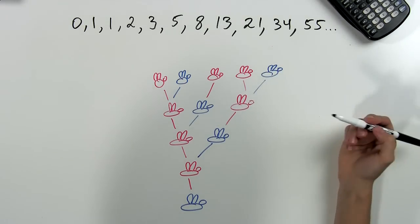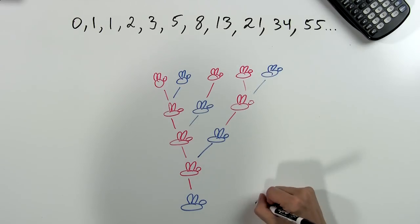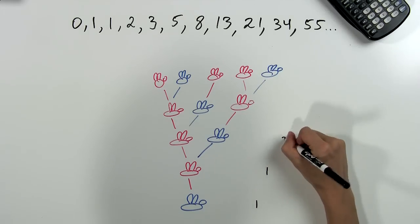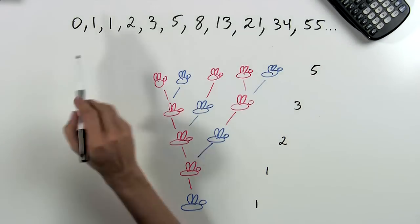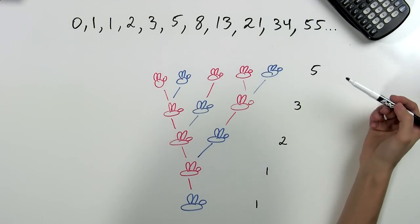Can you tell where this is going? If we add up the bees in each generation, we get one, one, two, three, and five, which is the beginning of our list of Fibonacci numbers. And if you continue drawing the parents, the list will continue.